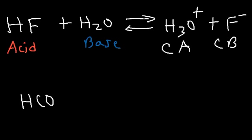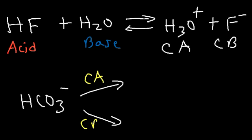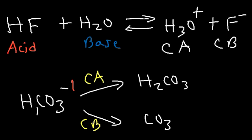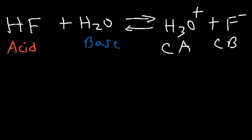Consider the bicarbonate ion HCO3⁻. To write its conjugate acid, increase the hydrogen number by one, giving H2CO3, and increase the charge by one: −1 + 1 = 0. To write the conjugate base, remove a hydrogen to get CO3 and decrease the charge by one: −1 − 1 = −2, giving CO3²⁻.